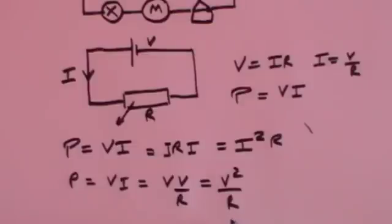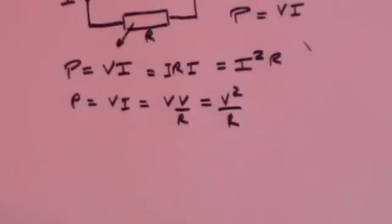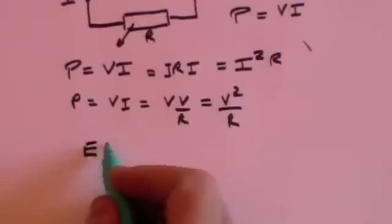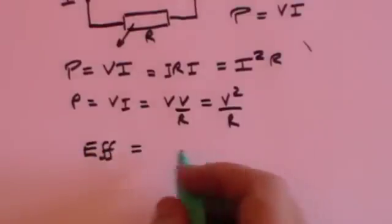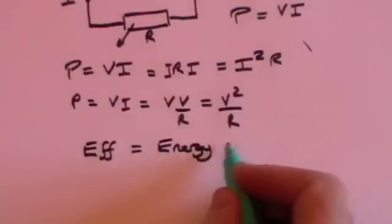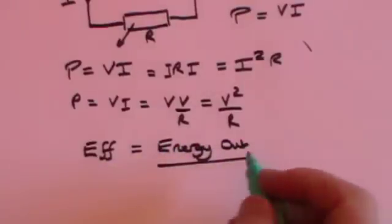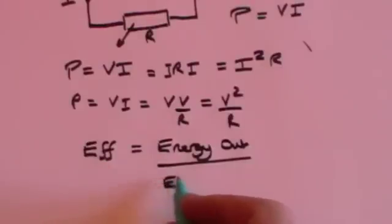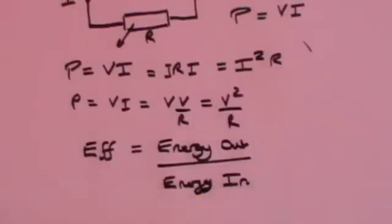The efficiency of an electrical component is defined as the energy, indeed the useful energy that you get out, divided by the energy that you have to put in. Ideally we would like it to be 100%, but it never is.